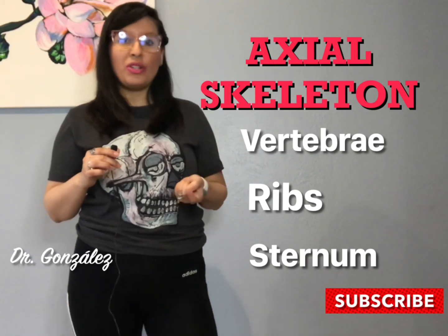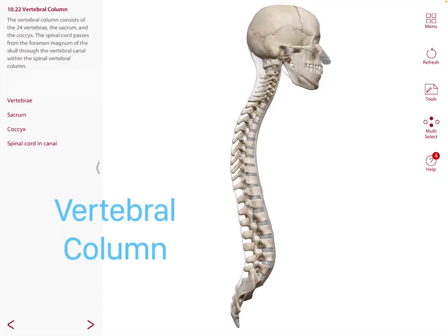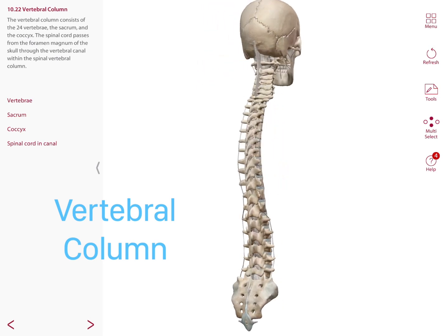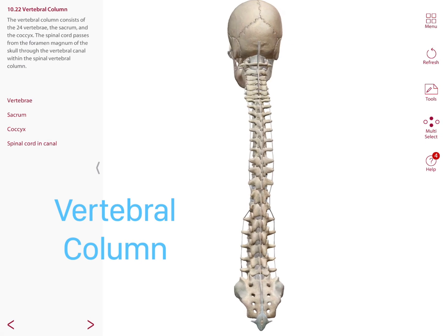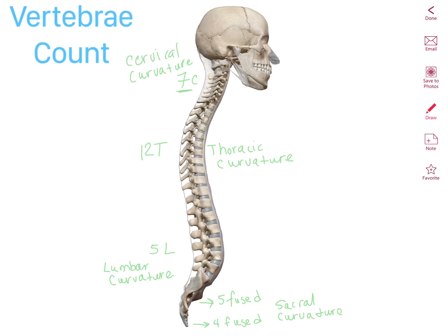The vertebral column consists of 24 vertebrae including the cervical, thoracic, and lumbar vertebrae, and it also consists of the sacrum and the coccyx. The spinal cord passes from the foramen magnum through the vertebral canal. We have seven cervical vertebrae, 12 thoracic vertebrae, 5 lumbar vertebrae, 5 fused vertebrae on the sacrum, and 3 to 4 fused vertebrae on the coccyx.